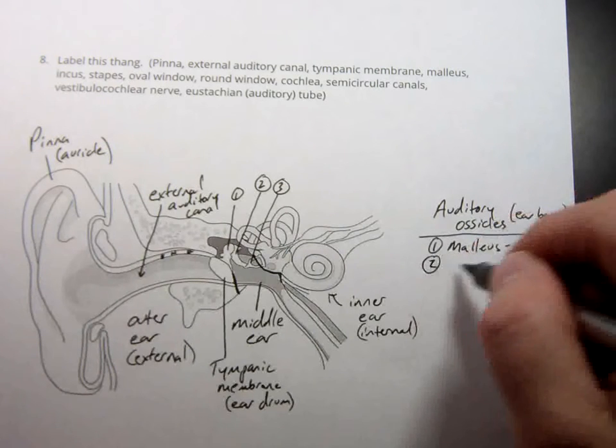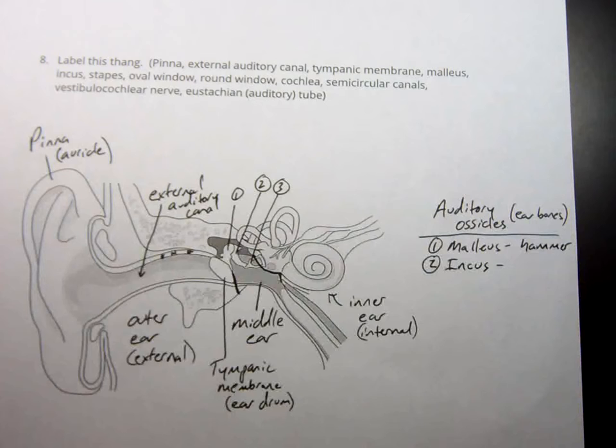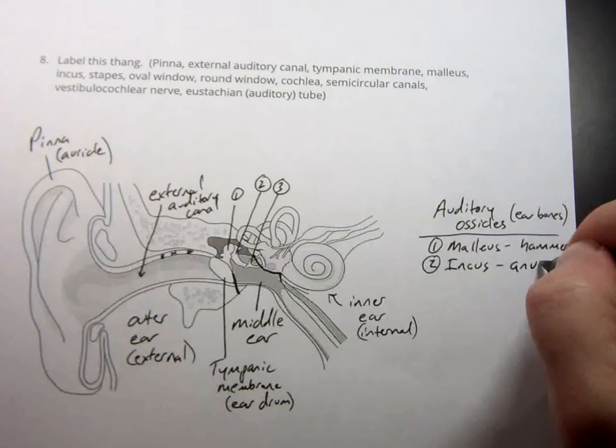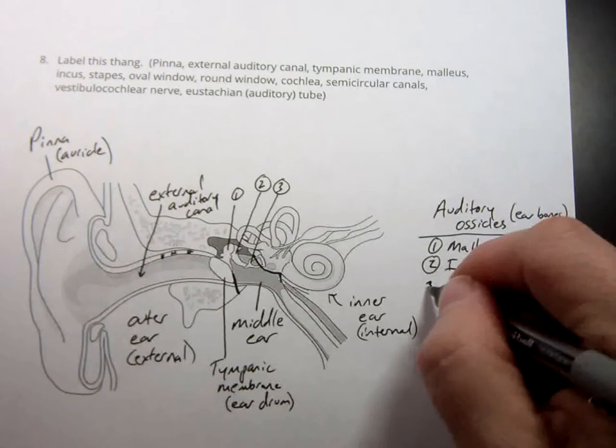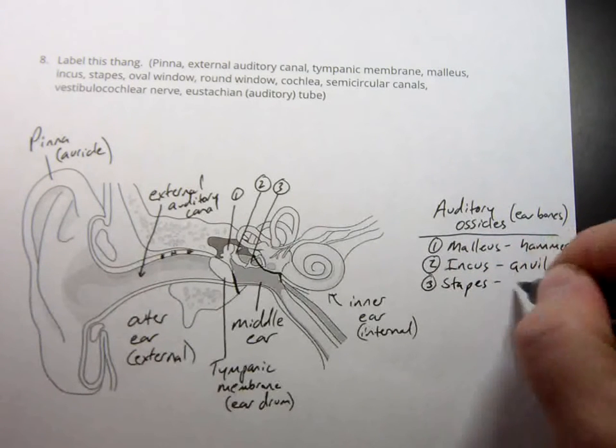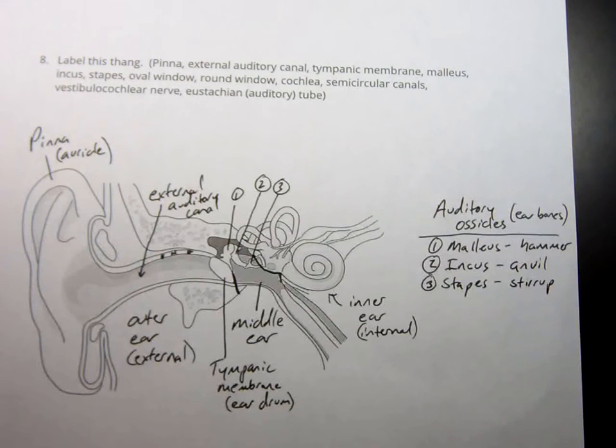The second one is called the incus. Not to be confused with the Aztecs. See what I did there? Incus is known as the anvil. And the last one is called the stapes. Or the stirrup. Those are all little bones located in the middle ear.